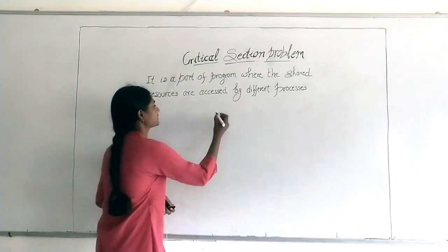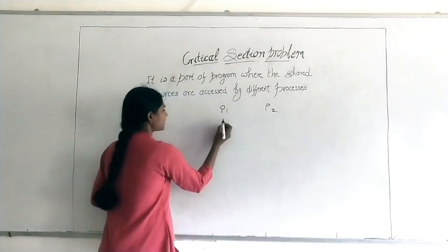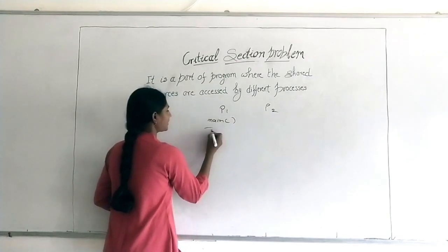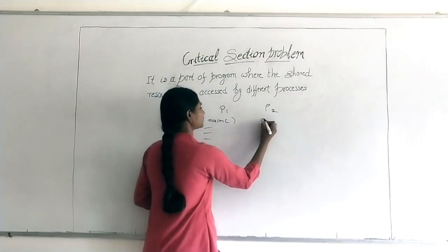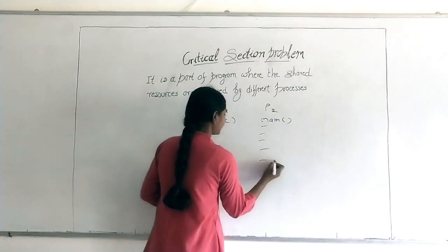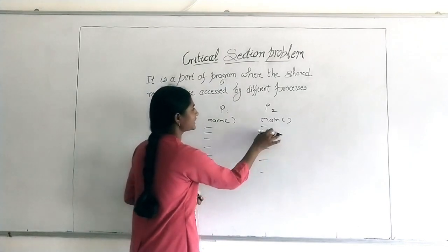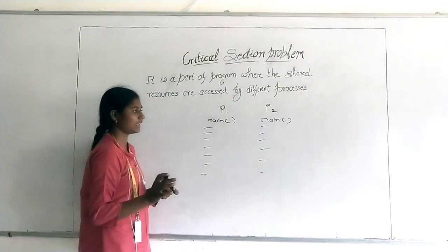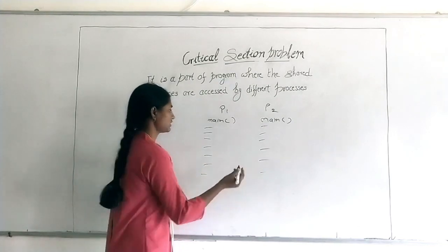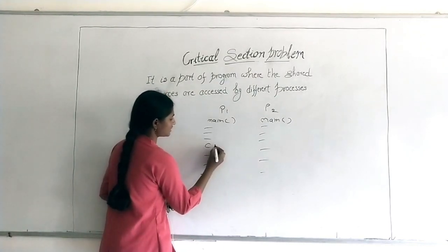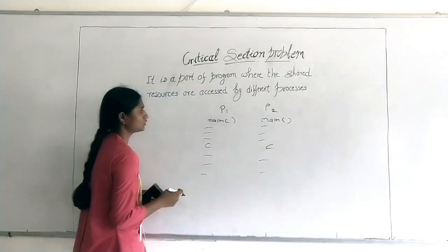For example, if we have two processes P1 and P2, each is having some program with some instructions written. Some portion will be there where both P1 and P2 contain the same resources. Let us see the resource which is carried in both processes P1 and P2.